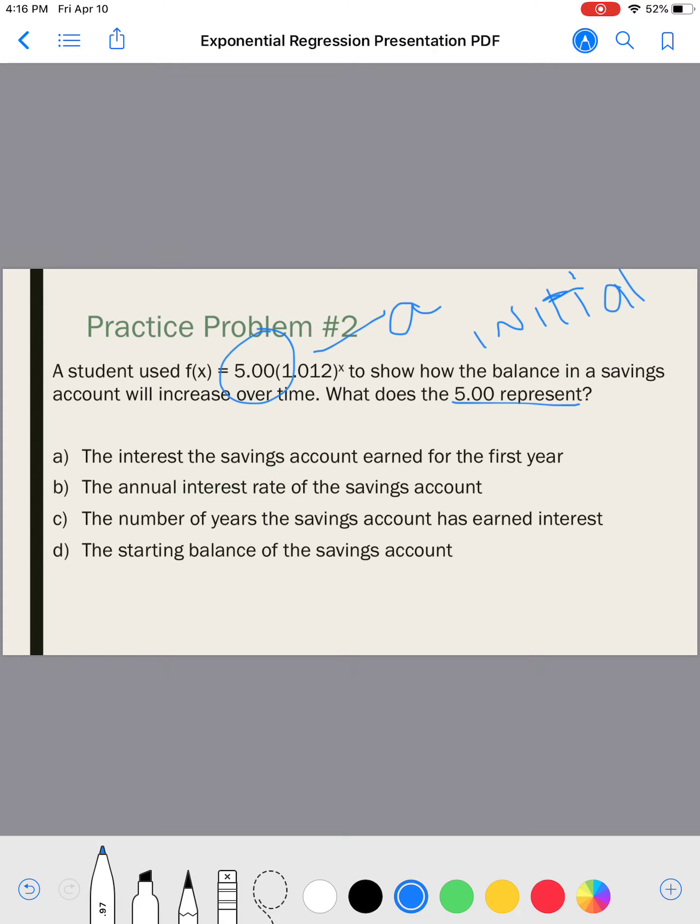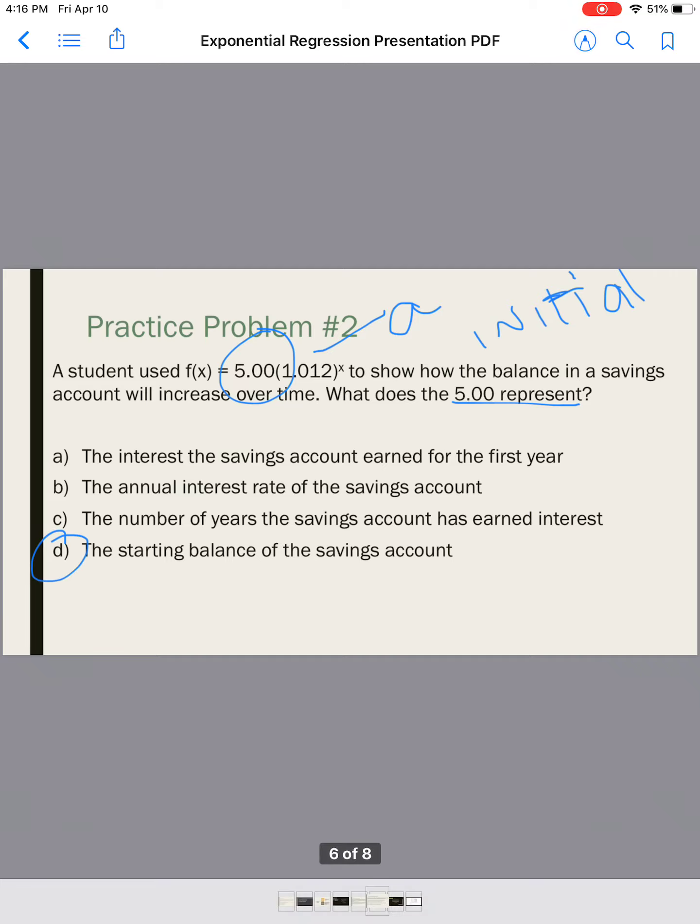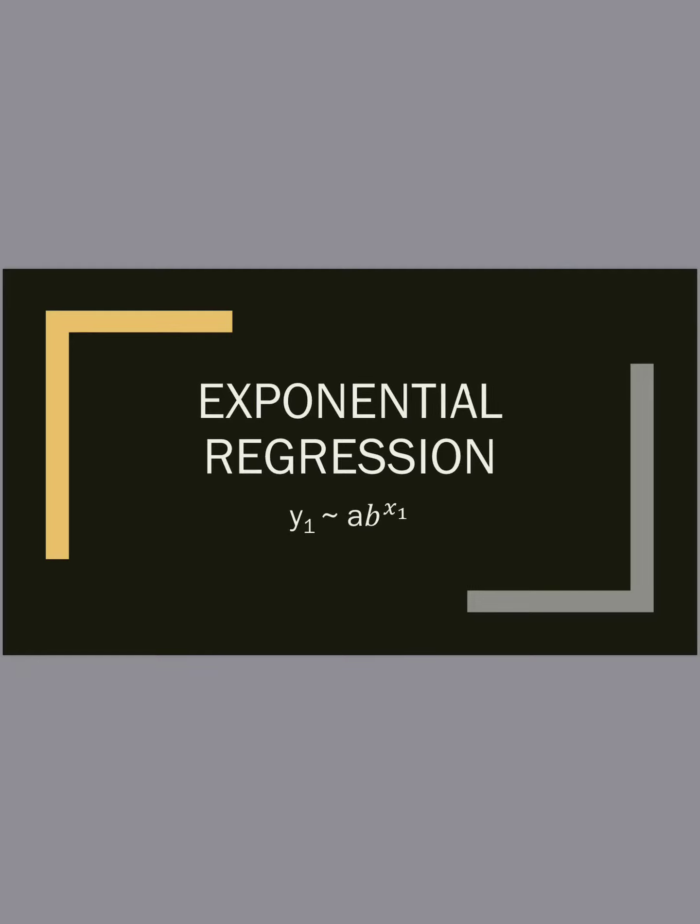All right. C, the number of years a savings account has earned interest. The number of years would be represented by the X. D, the starting balance of the savings account. Yes, that's my answer. This is the starting amount. All right. This is the very last thing.